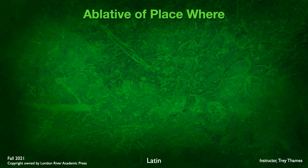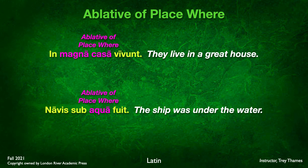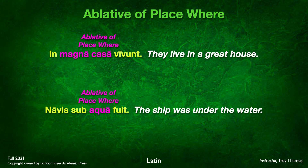Let's look at a couple of examples of the ablative of place where. First: in magna casa, we won't — they live in a great house. Casa is in the ablative case — you can see the ā with a macron; it's a first declension ablative singular. This tells us where the action is taking place. Second example: navis sub aqua fuit — the ship was under the water. Aqua is a first declension ablative singular, indicated by the ā with a macron, and preceded by the preposition sub. This is the ablative of place where — a pretty straightforward and easy function to recognize and translate.